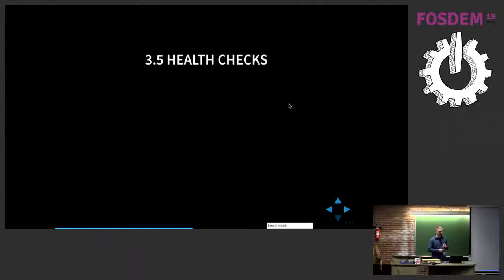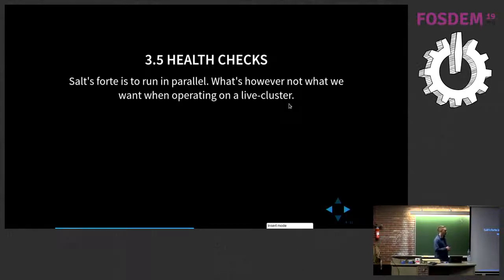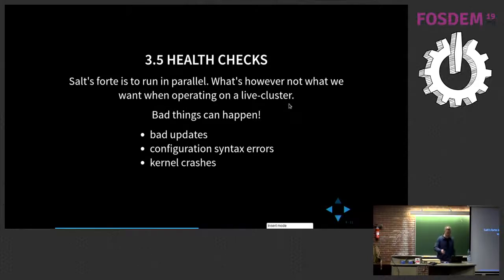We also added health checks. Salt is very good at running things in parallel — that's nice when you want to spin up a cluster from zero to a running cluster, and you can be really fast. But when you're operating on a live cluster, you don't really want to execute everything at the same time. Bad things can happen: for example, if there's a bad update in your channel and you apply it on all your nodes at once, or you push a misconfigured configuration and everything blows up — you have outage, all your clients get disconnected, and there's a longer list of things that can go wrong.